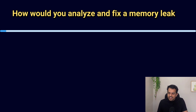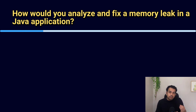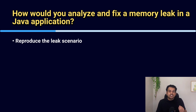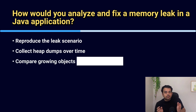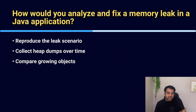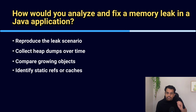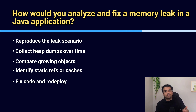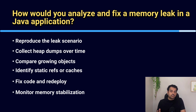Moving to our next question: how would you analyze and fix a memory leak in a Java application? First, reproduce the scenario so the leak appears consistently and collect heap dumps at intervals. Compare them to see which objects keep growing. Identify root causes like static references, unclosed resources, or large caches. Fix the leak in the code and redeploy. Finally, monitor memory after the fix to ensure it stabilizes.